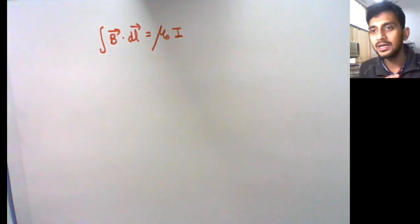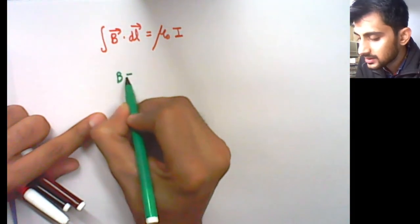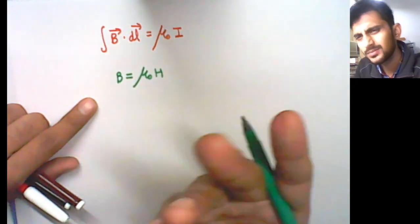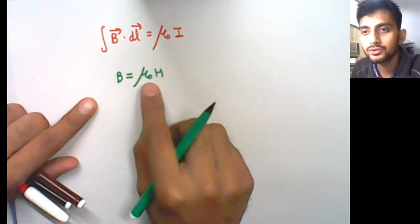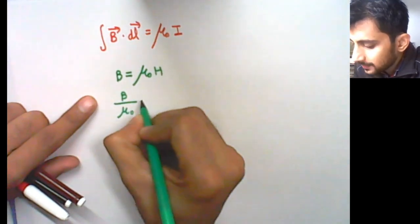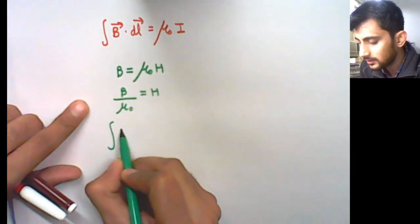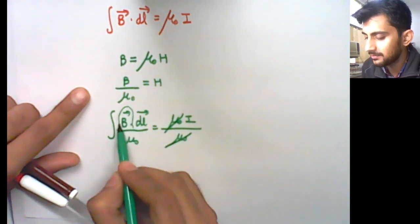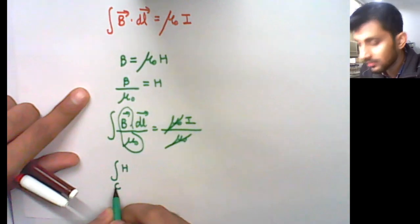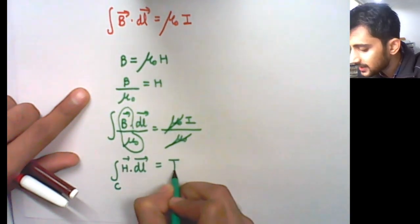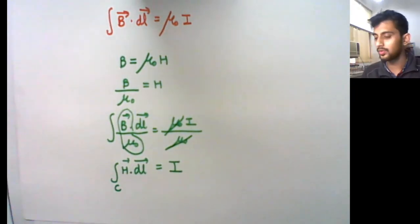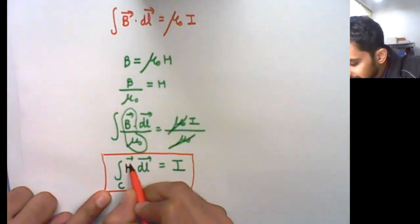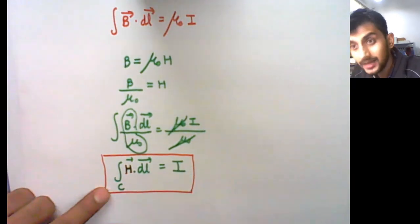There is a relation between magnetic field intensity H and magnetic flux density B: B equals mu0 times H, just as D equals epsilon times E for electric fields. So B divided by mu0 equals H. Dividing both sides of our equation by mu0, we get that the integration over a closed path of H·dL equals the current enclosed in the loop. This is Ampere's law — the line integral of magnetic field intensity along a closed path equals the current enclosed in the loop or coil.